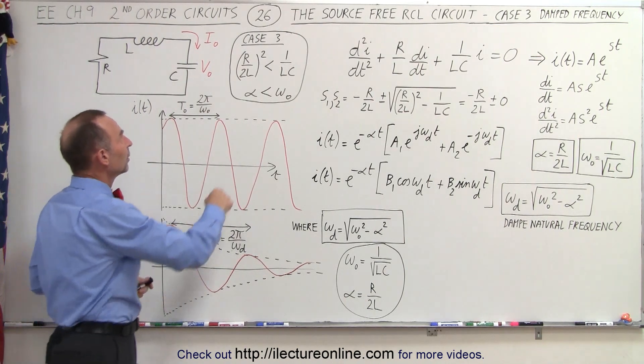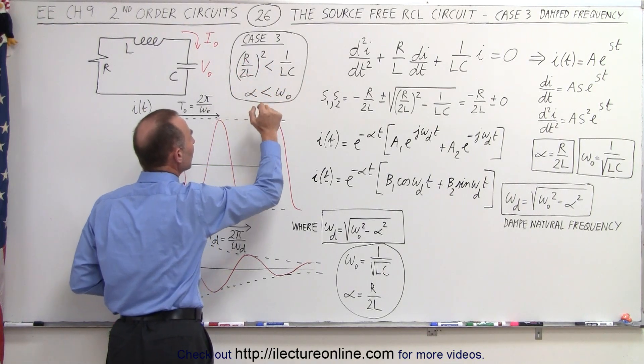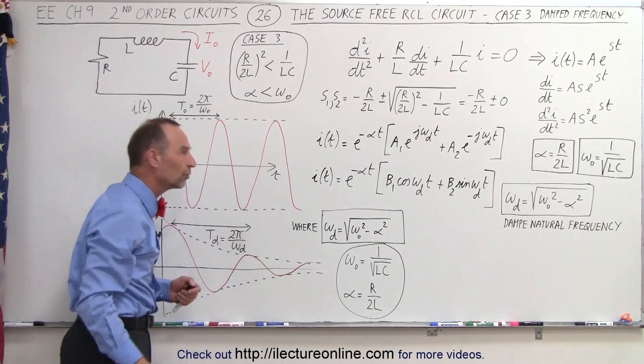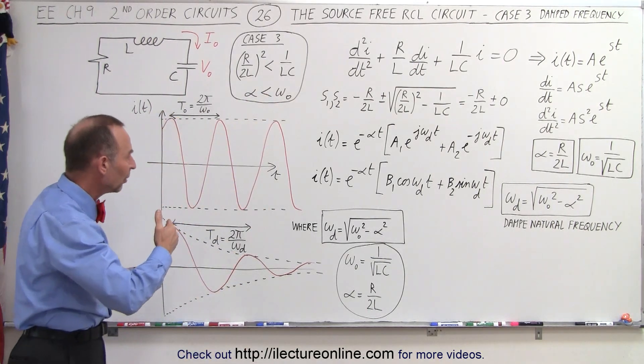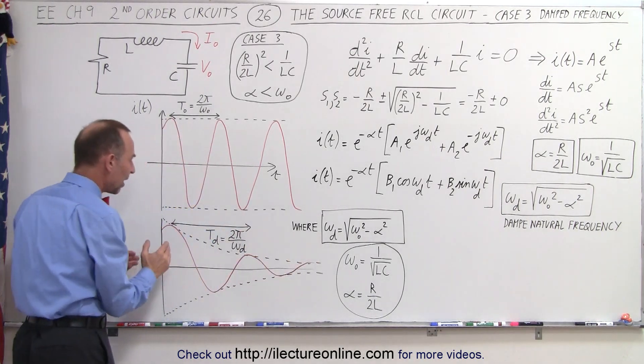When R over 2L squared is smaller than 1 over LC, the damping factor is smaller than the natural frequency of the circuit. In that case the circuit is under-damped. Even though the magnitude of the oscillations will diminish over time, you still have an oscillation.